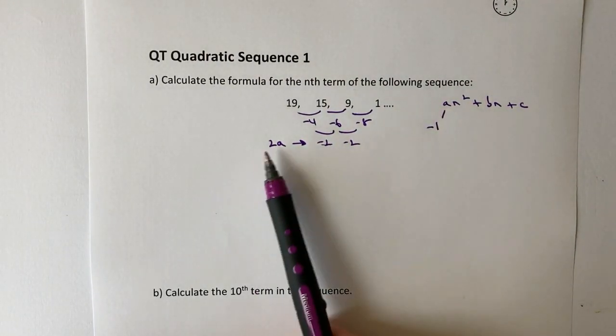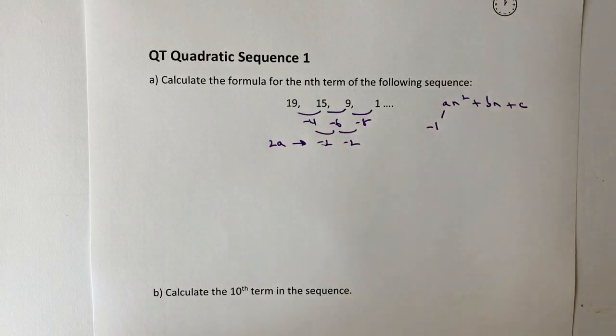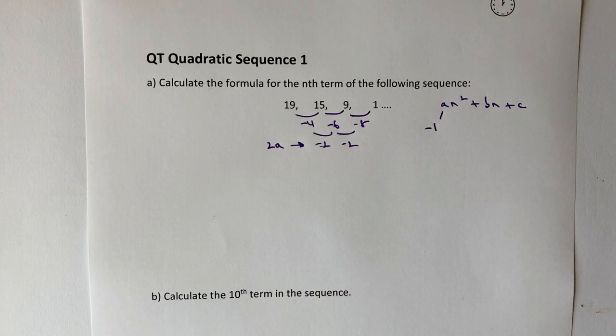Okay, so 2a is minus 2, so therefore a is going to be minus 1, because it's the same as saying minus 2 divided by 2.